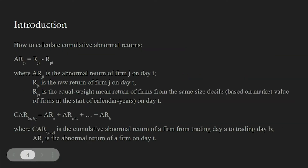The key component that we are using for this research is the CAR, or Cumulative Abnormal Return. To calculate the CAR, we first define the abnormal return, which is equal to the raw return of the firm subtracted by the expected return. Here we split firms into 10 sized deciles and take the average return of each day for the firm's decile to be its expected return. Finally, the CAR is simply the sum of the abnormal returns over time in days.